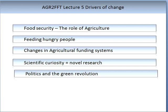Let us talk briefly about the drivers of change that enabled the Green Revolution. In large part it was about feeding hungry people and food security. There were significant changes in how agriculture was funded, with an emphasis on applied research for scientists to work directly with farmers — enabling rapid change and, most importantly, rapid uptake. Some advances were not due to agricultural research, but were the result of novel research and scientific curiosity, mostly in the areas of genetic engineering, which enabled the input of new genes and contributed significantly to increased productivity.